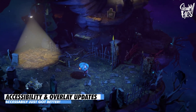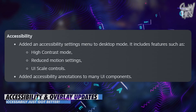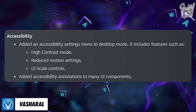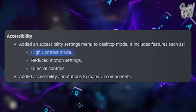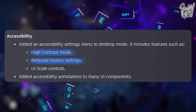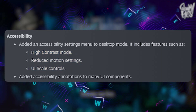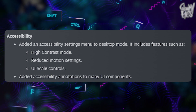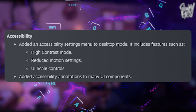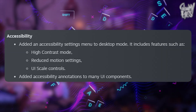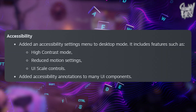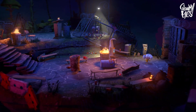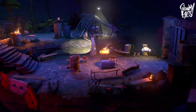One of the coolest things about this update is the new accessibility settings menu in desktop mode. You now have high contrast mode, reduced motion settings, and UI scale controls — basically, Steam is giving you more ways to make the client work the way you need it to. On top of that, many UI components now include accessibility annotations, which helps screen readers and other tools do their job properly.